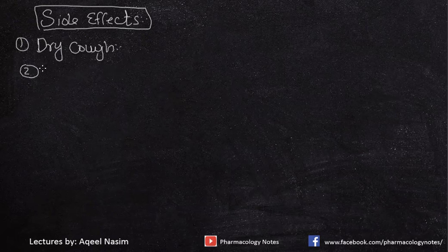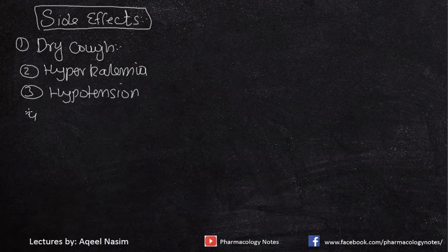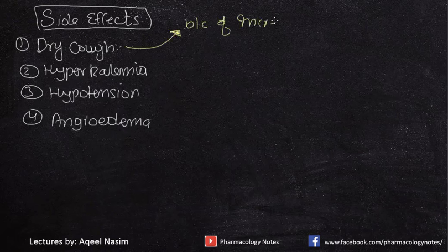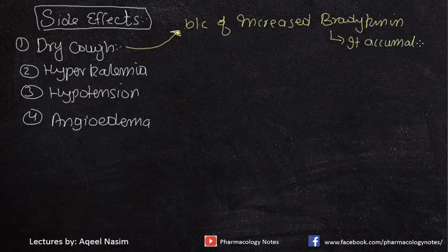The important side effects of ACE inhibitors are dry cough, hyperkalemia, hypotension, and angioedema. Dry cough is associated with increased bradykinin, which is thought to accumulate in the respiratory epithelium of the lungs, causing dry cough.